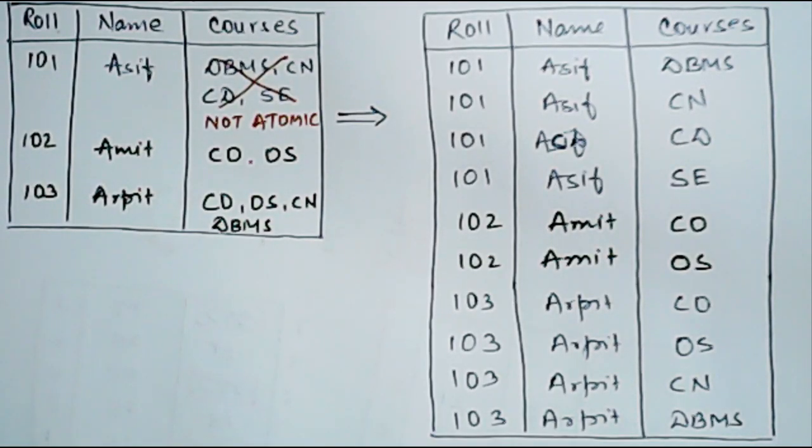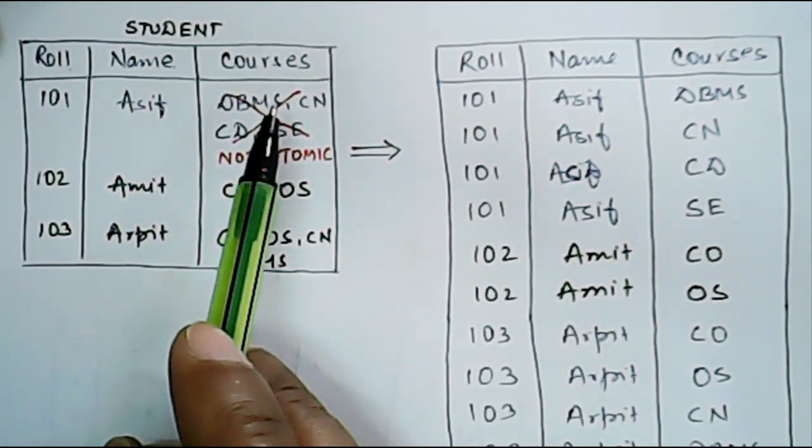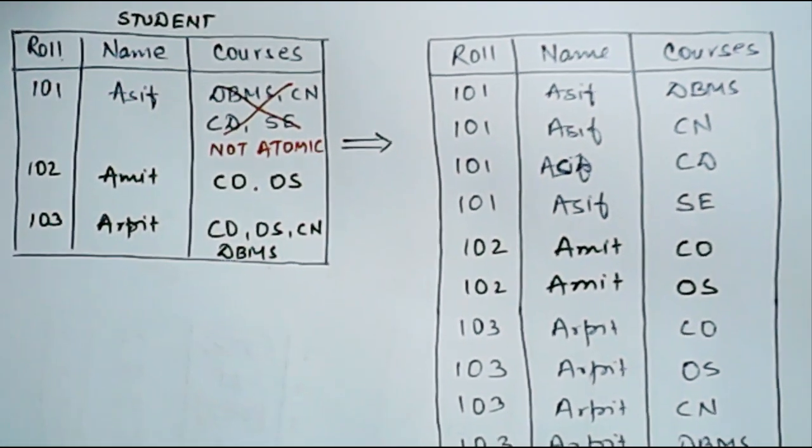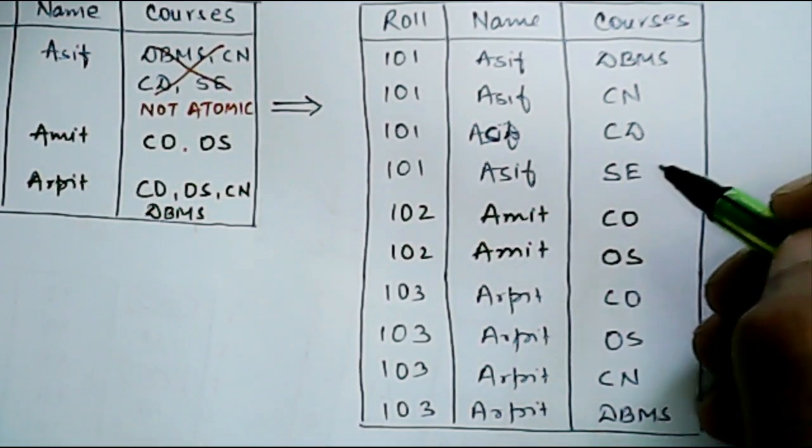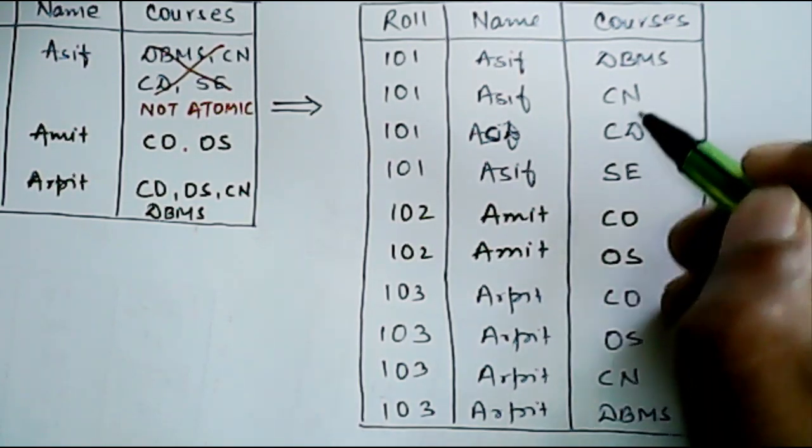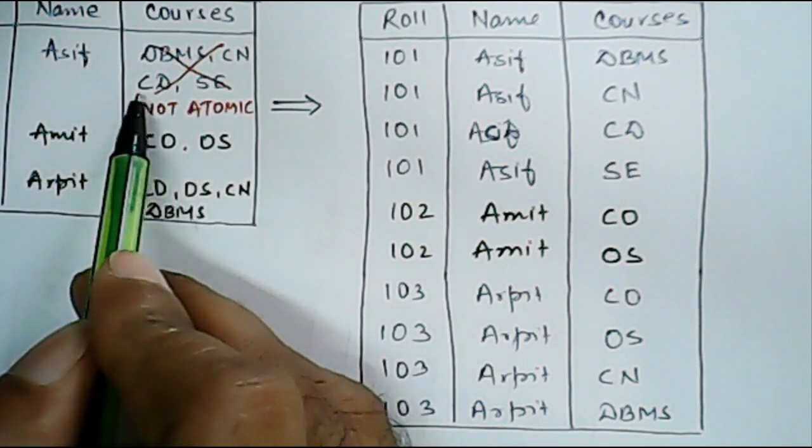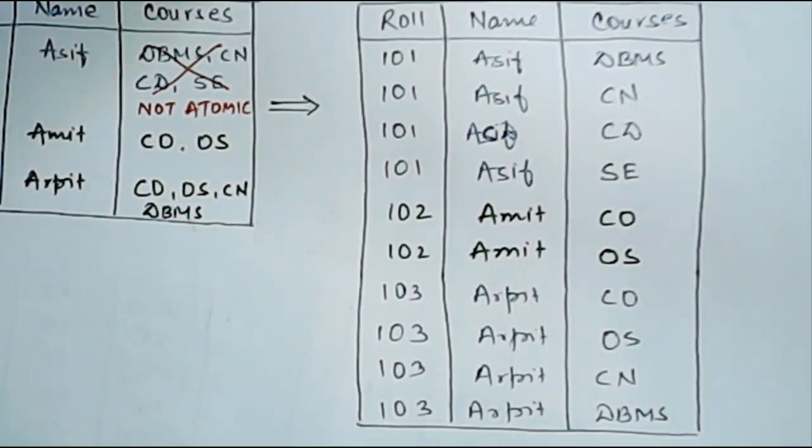The only criteria which the first table, that is the student table, was not satisfying is the values being non-atomic. So what we will do is we will just repeat these values, these entries with the single values of courses. So here we had DBMS, computer network, CN, CD and software engineering, all these multiple values.